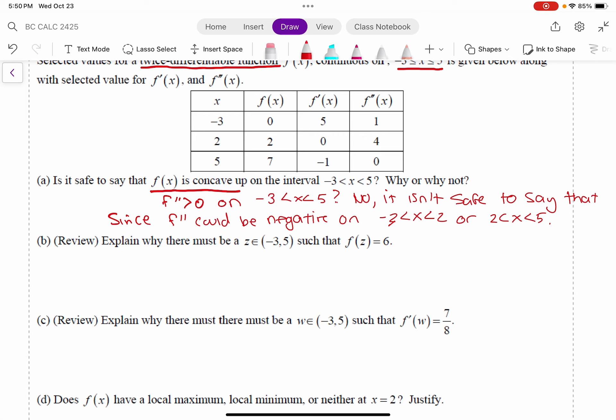B says, it's a review, explain why there must be a z in between negative 3 and 5 such that f of z equals 6.